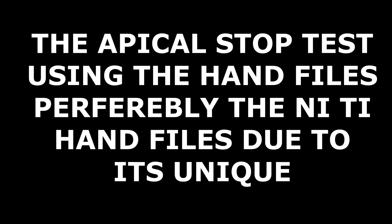This method will be the apical stock test using hand files, preferably the NiTi hand files due to their flexibility. It's a unique test we use right before choosing the gutta-percha to obturate the canal. We prefer the NiTi files; if we can't get them, we can use flex hand files. I always start with file ISO 30 — we grab the file, put it inside the canal to the full working length, and connect the electronic apex indicator to the file.